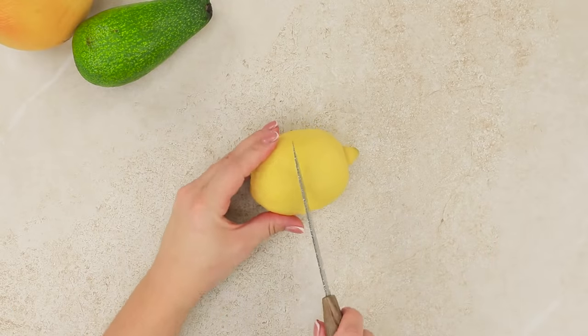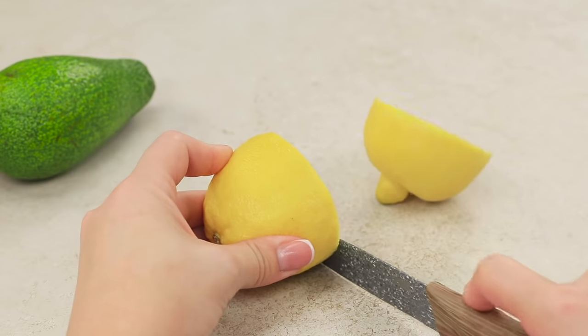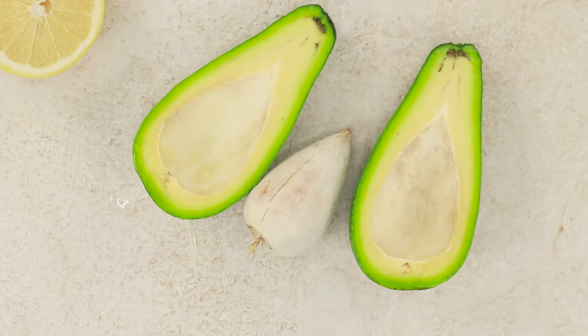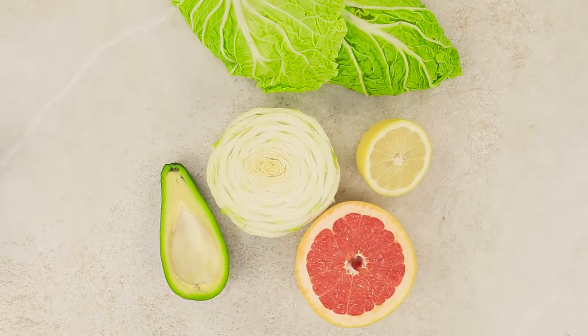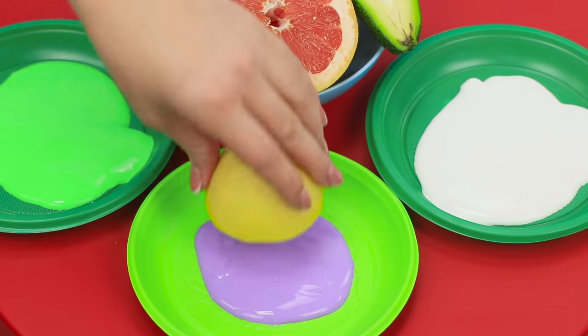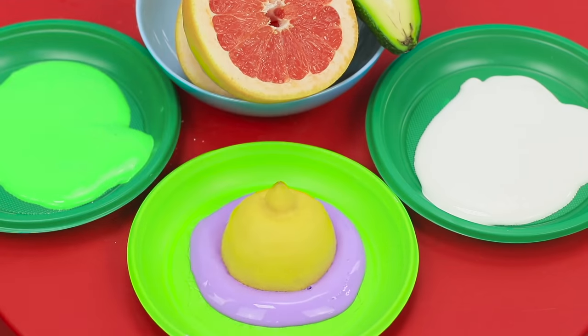Some vitamins would be good for this wall. Cut a lemon, an avocado, a grapefruit, a cabbage, and... what else do you have in the fridge? Pour paint into disposable plates. Dip the slices into the paint and use them as stamps.